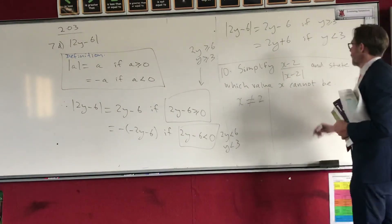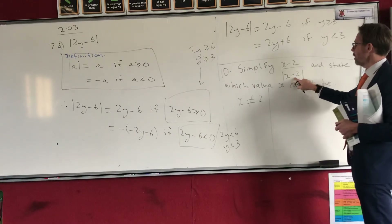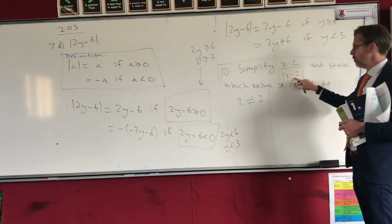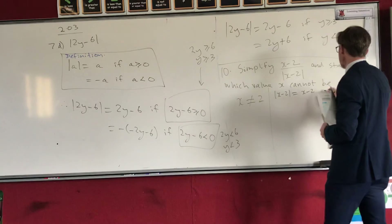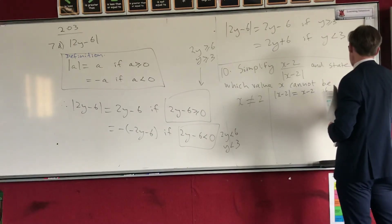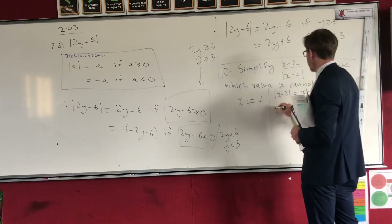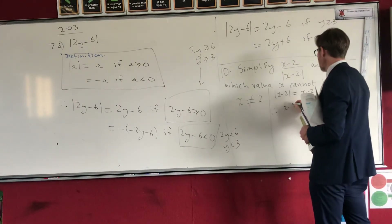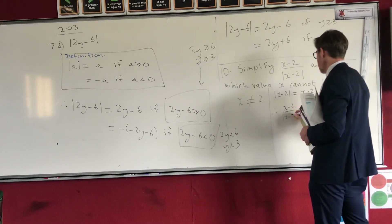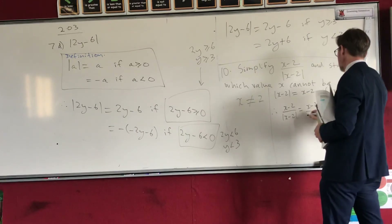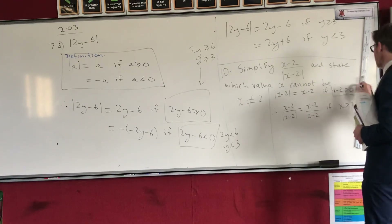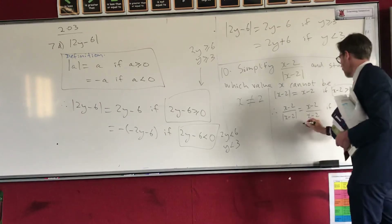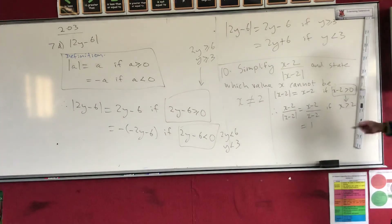We've got to remove the absolute value sign. The absolute value of x minus 2 equals x minus 2 if x minus 2 is bigger than 0. Therefore, x minus 2 over the absolute value of x minus 2 equals x minus 2 over x minus 2 if x is bigger than 2. That simplifies to 1, so this expression equals 1 if x is bigger than 2.